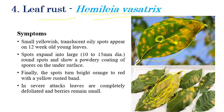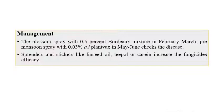When you touch the spots you can feel a rough or raised surface. Under the microscope, billions of spores can be seen. In severe stages, complete defoliation occurs and the berries remain very small, unable to develop properly. For management: during blossom stage spray Bordeaux mixture at 0.5% especially in February and March. During pre-monsoon stage in May and June, spray Oxycarboxin at 0.03% to 0.3%. Adding spreaders and stickers like linseed oil, Teepol, or casein can increase fungicide efficiency.